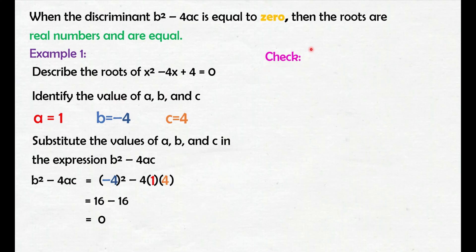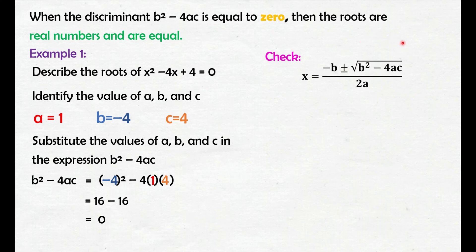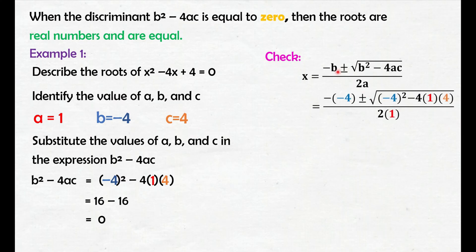Para sa akin, ito na yung pinakamabilis na way para masolve ito since nasolve na natin yung discriminant dito. Given yung quadratic formula: x equals negative b plus or minus the square root of b squared minus 4ac all over 2a. I-substitute lang natin itong mga value ng a, b, and c. Palitan natin si b ng negative 4, si a ng 1, at si c ng 4. Ingat tayo dito — madalas nakakalimutang ilagay yung sign na negative ng b natin.